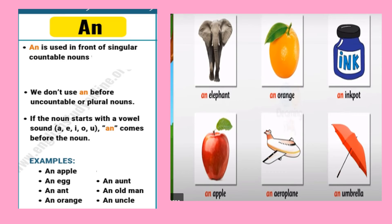An elephant — the word 'elephant' is starting with the vowel sound E. We are talking about one elephant, that is singular number, and the elephants can be counted. In the same way: an orange, an ant, ink pot, umbrella, aeroplane, apple — they can be counted and they are starting with a vowel sound. That is why we use 'an' before singular countable nouns which start with a vowel sound.